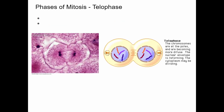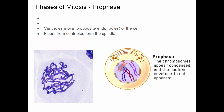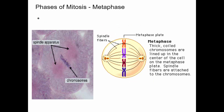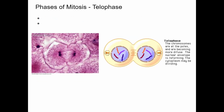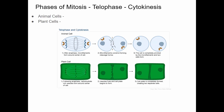If we started with four chromosomes, we end up with four chromosomes in each daughter cell. Looking at the colors in the diagram — orange, blue, red, and purple — we can see each daughter cell ends up with the same set. So we have identical genetic material at the end of this process. We started with a single parent cell and ended up with two daughter cells that have the same genetic material as the original parent cell.